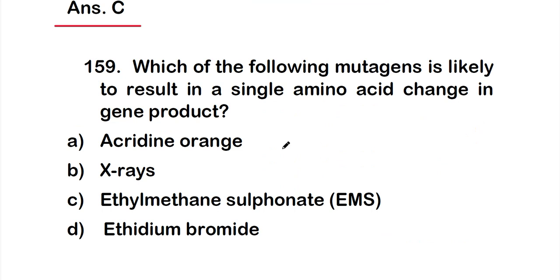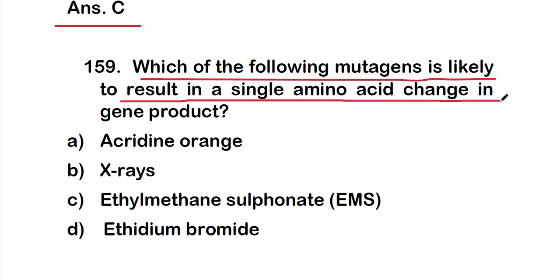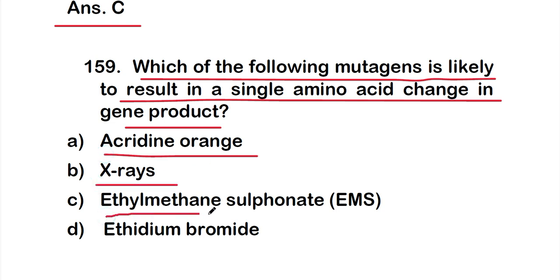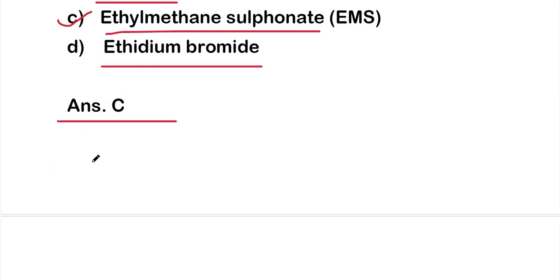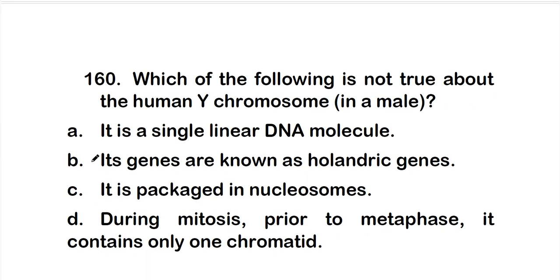Question 159: Which of the following mutagens is likely to result in a single amino acid change in the gene product? Options: A — acridine orange; B — X-rays; C — ethyl methane sulfonate (EMS); D — ethidium bromide. The correct answer is option C — EMS (ethyl methane sulfonate) is likely to result in a single amino acid change.